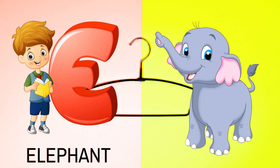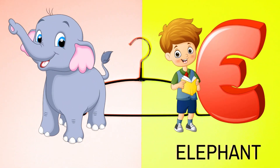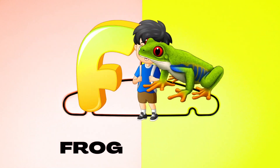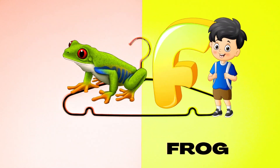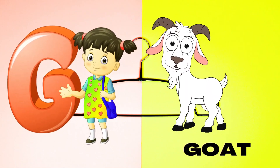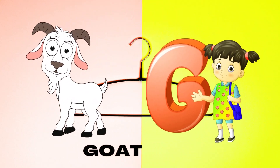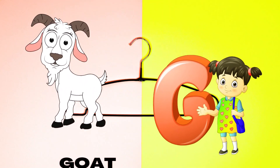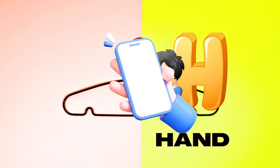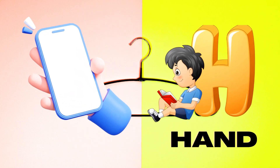E is for Elephant, E-E-Elephant. F is for Frog, F-F-Frog. G is for Goat, G-G-Goat. H is for Hand, H-H-H-Hand.